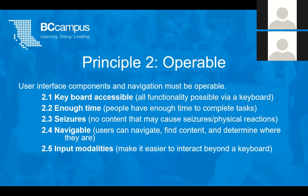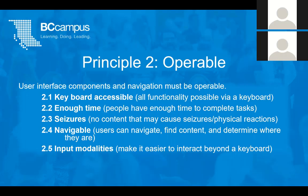The second principle is operable, which holds that user interface components and navigation must be operable. This principle covers how people can navigate and interact with a resource. For example, functionality must be operable with a keyboard. People need to have enough time to complete tasks. None of the content should be designed so that it causes seizures or physical reactions, and the navigation should be easy and make sense.